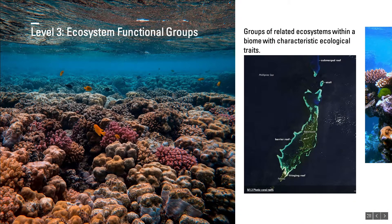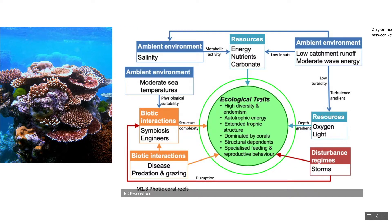Ecosystem functional groups are groups of related ecosystems within a single biome that share common ecological drivers, which in turn promote similar biotic traits that characterize the group. They are derived from the top-down by subdivision of biomes. For example, tropical coral reefs can have different structure and biota, but all belong to the photic coral reef functional group in the marine shelf biome. The key ecological drivers and ecological traits of all functional groups are summarized in descriptive profiles and illustrated by diagrammatic assembly models.